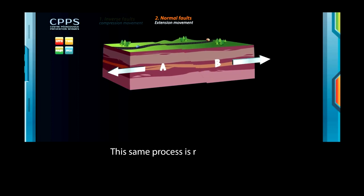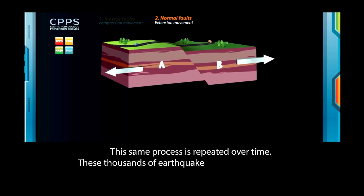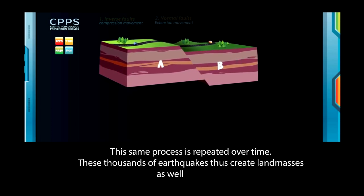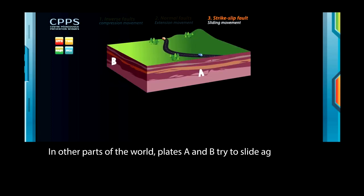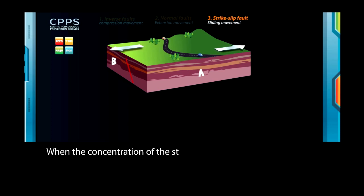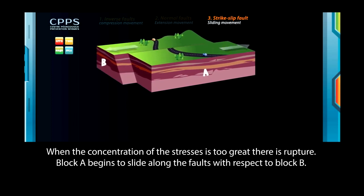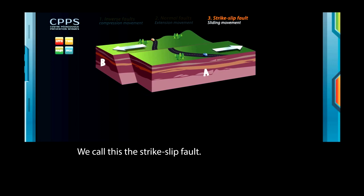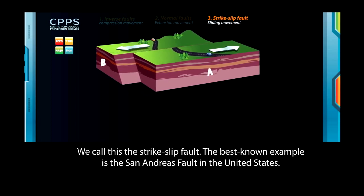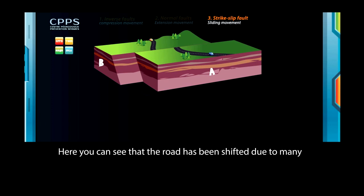This same process is repeated over time. These thousands of earthquakes thus create land masses as well as valleys. In other parts of the world, plates A and B try to slide against each other, but are stuck at the level of the fault. When the concentration of the stresses is too great, there is rupture. Block A begins to slide along the fault with respect to block B. We call this the strike-slip fault. The best known example is the San Andreas Fault in the United States. Here you can see that the road has been shifted due to many earthquakes which have occurred over time.